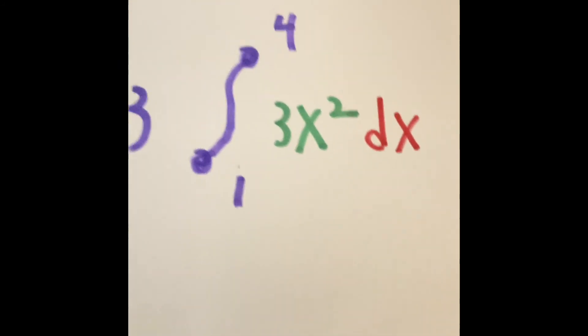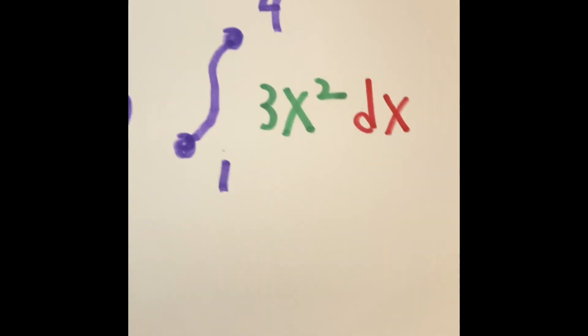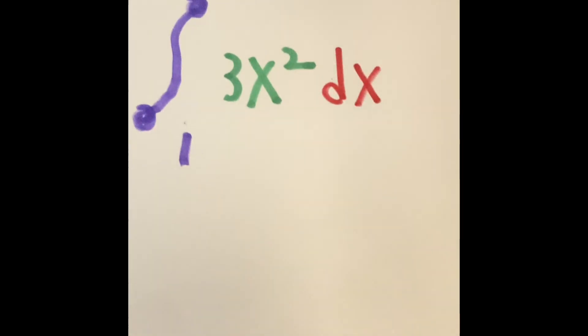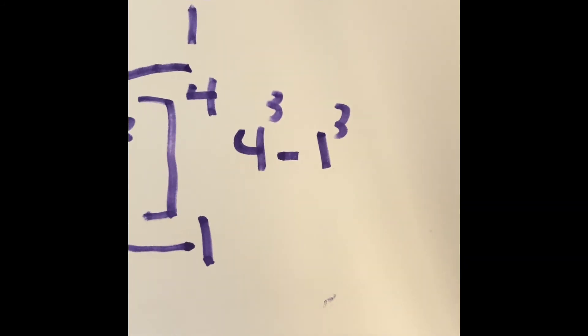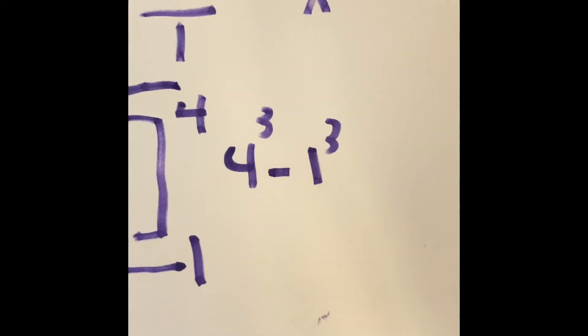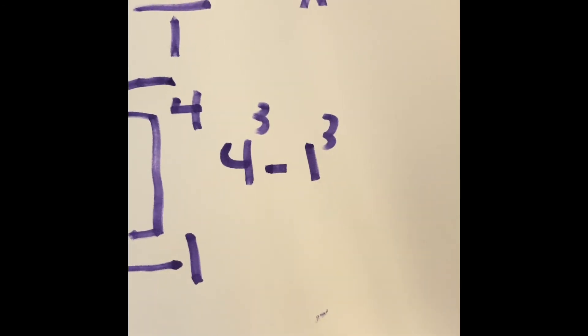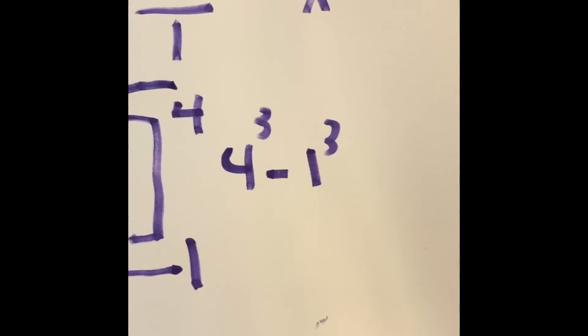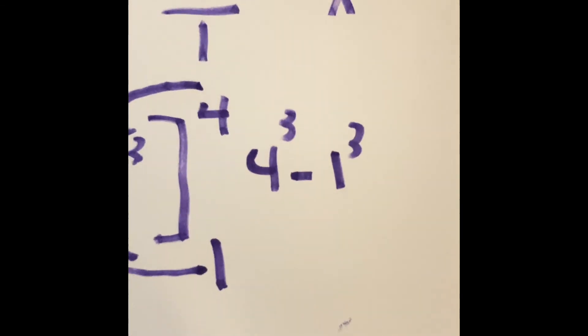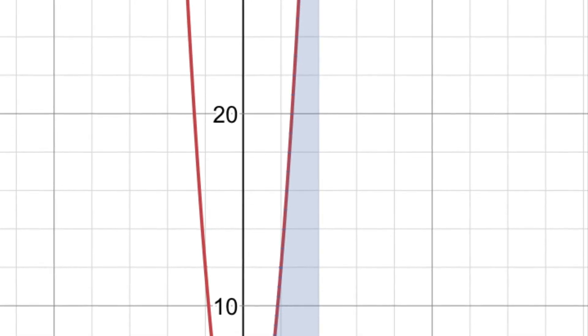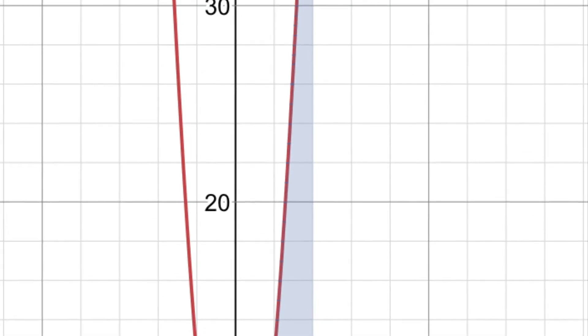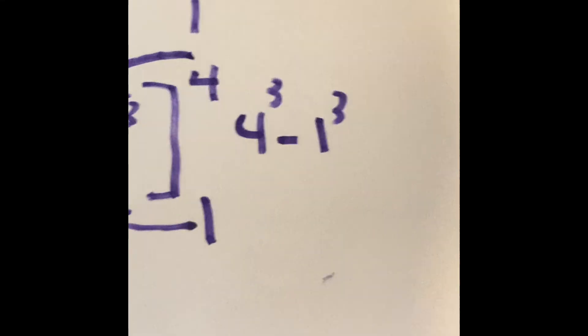Because the integral is limiting the boundaries on what you can and cannot work. Like, it's limiting your workspace on the graph, just like the last video. So if we want to find the area of that irregular shape, we have to find the difference between the x equals 4 point on the x axis and the x equals 1 on the x axis.